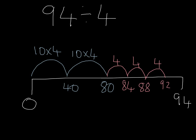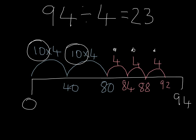So let's count and see how many we've got. One group of 10 lots of 4, another 20, 21, 22, 23 lots of 4. Let's count the remainders — remainder 2.